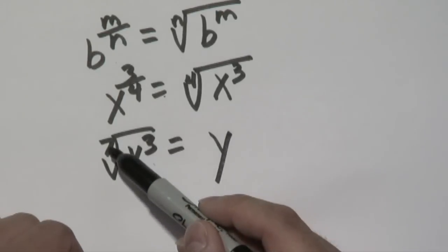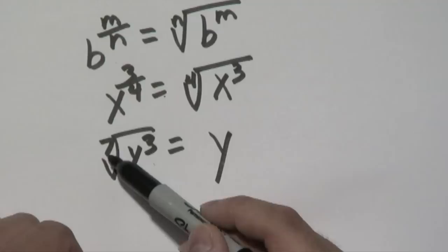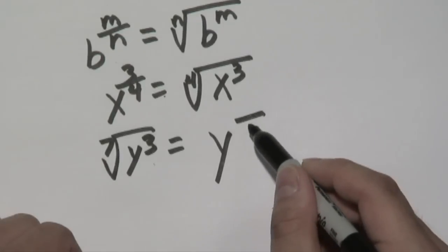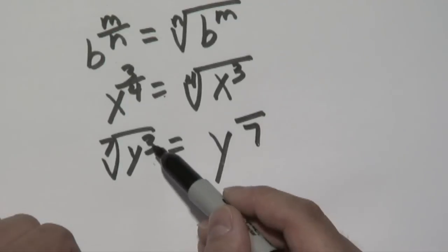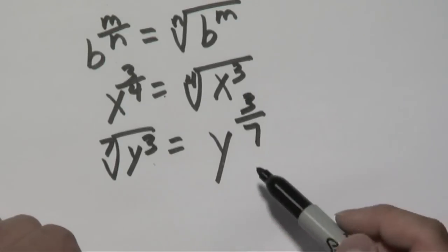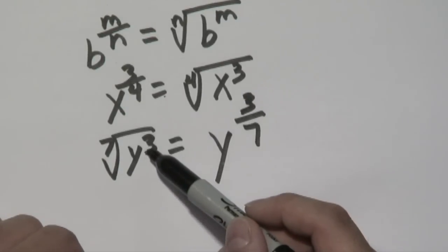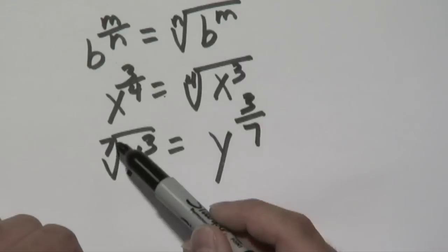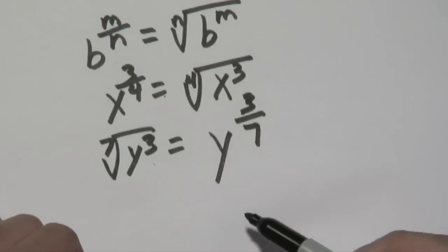You have y. Now the number that's inside this portion of the radical is always going to be in the denominator, and what's inside will always be the numerator. So inside exponent is the numerator, and the outside number is the denominator.